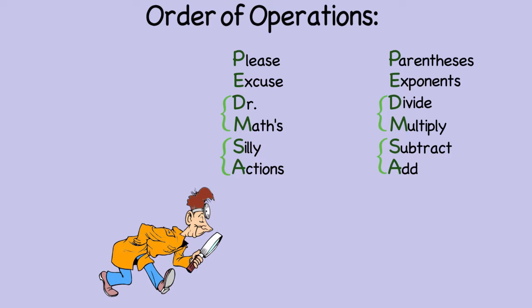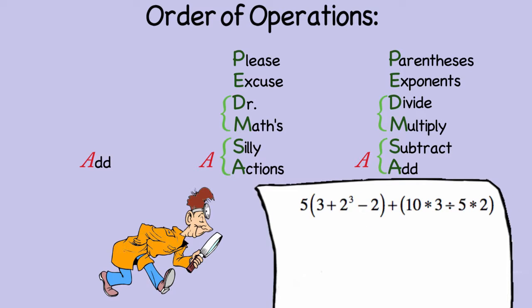Remember when we were learning to subtract negative numbers? We found that subtraction is the same as adding the opposite of the number to the right of the subtraction sign. Looking back at the second example, we noticed that we could have written 2 to the third minus 2 as 2 to the third plus negative 2, since they mean the same thing.